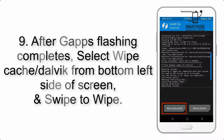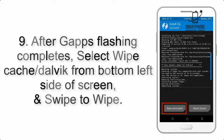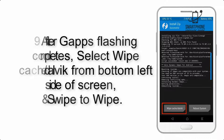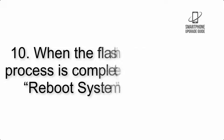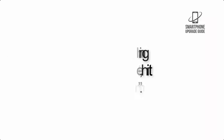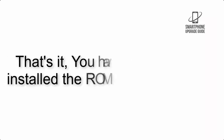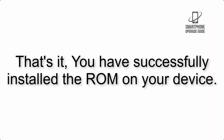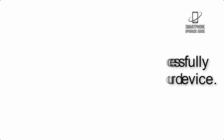Step 9: After GApps flashing completes, select Wipe Cache and Dalvik from the bottom left side of the screen and swipe to wipe. Step 10: When the flashing process is complete, hit Reboot System. That's it — you have successfully installed the ROM on your device.